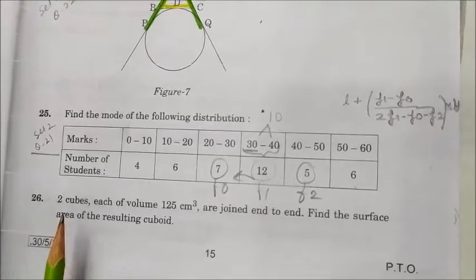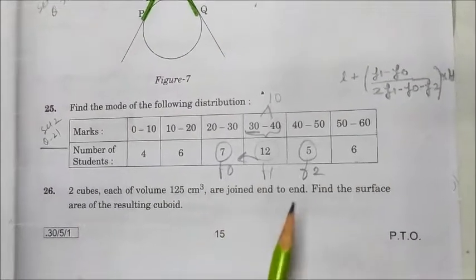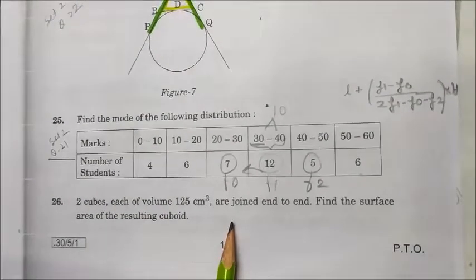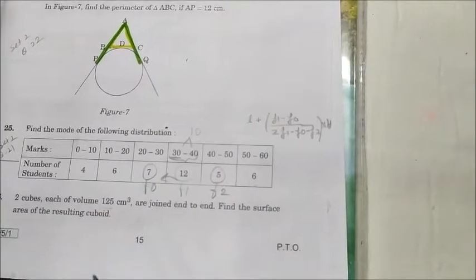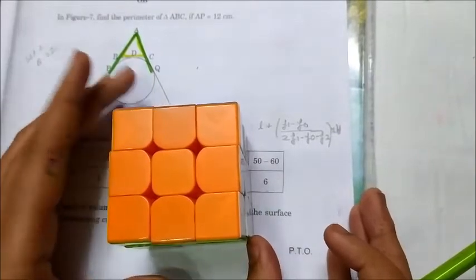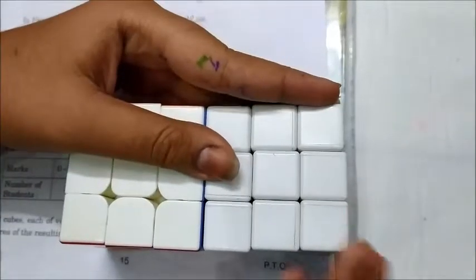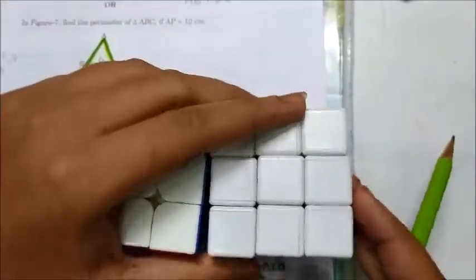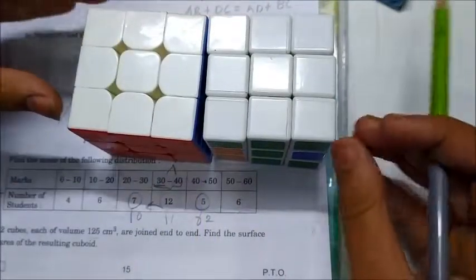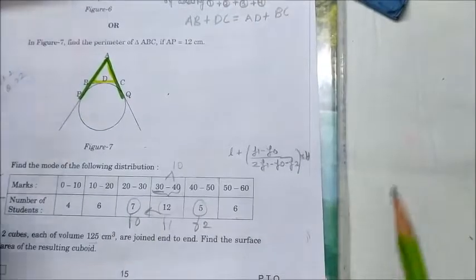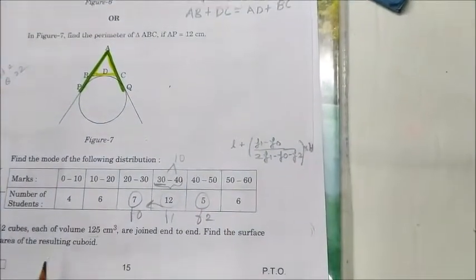Question number 26: Two cubes each of volume 125 cm³ are joined end to end. Find the surface area of the resulting cuboid. The two cubes are joined together — one cube attached to another. Volume of each cube is 125 cm³, so the side length is the cube root of 125. We need the total surface area of the resulting shape, not just the curved surface area of the individual cubes.